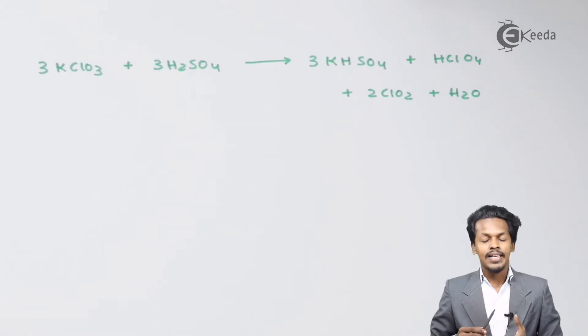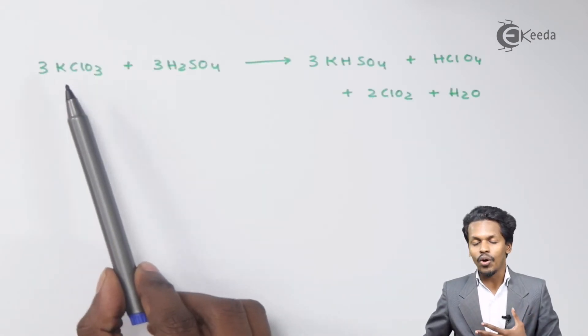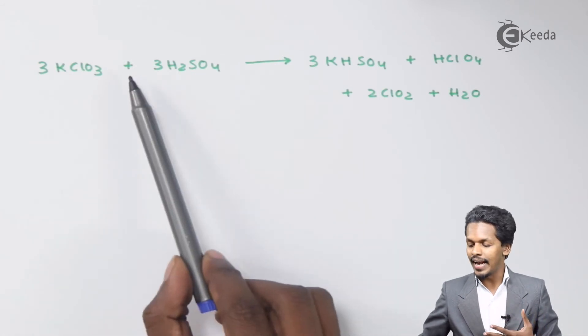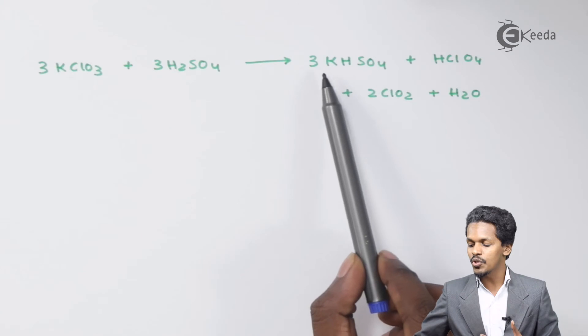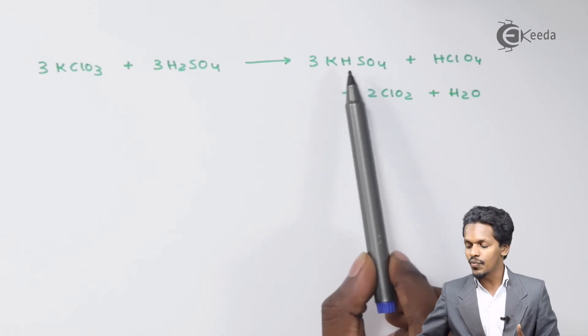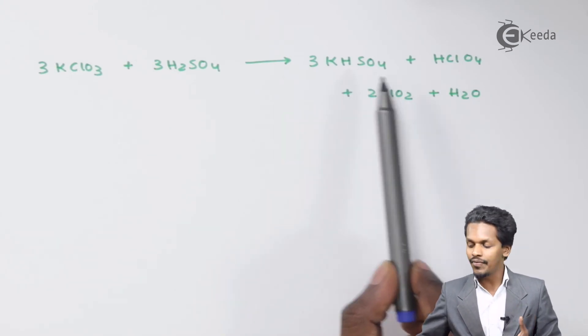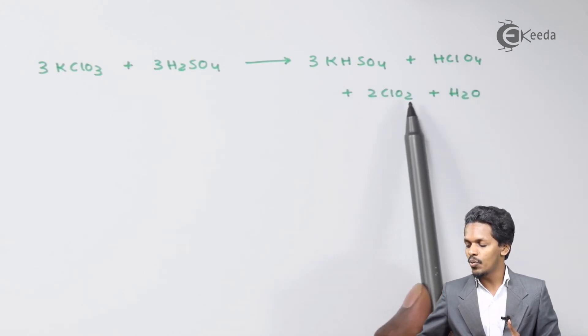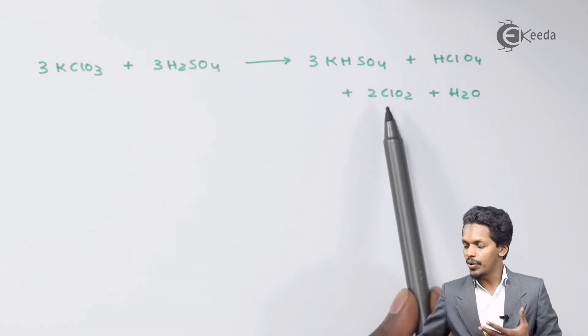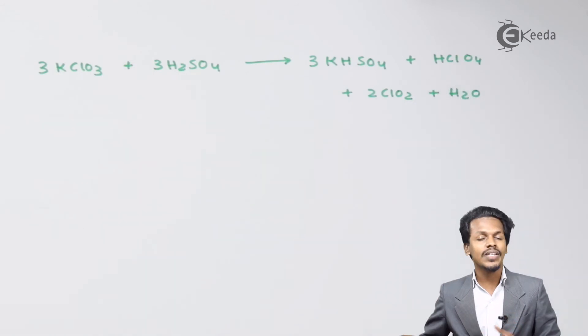Talking about the last reaction: suppose if we consider 3 moles of potassium chlorate and we are reacting with 3 moles of H2SO4, this will result in the formation of 3 moles of KHSO4, known as potassium hydrogen sulfate, along with HClO4 and 2 moles of ClO2, that is an oxide of chlorine, along with H2O as a byproduct.